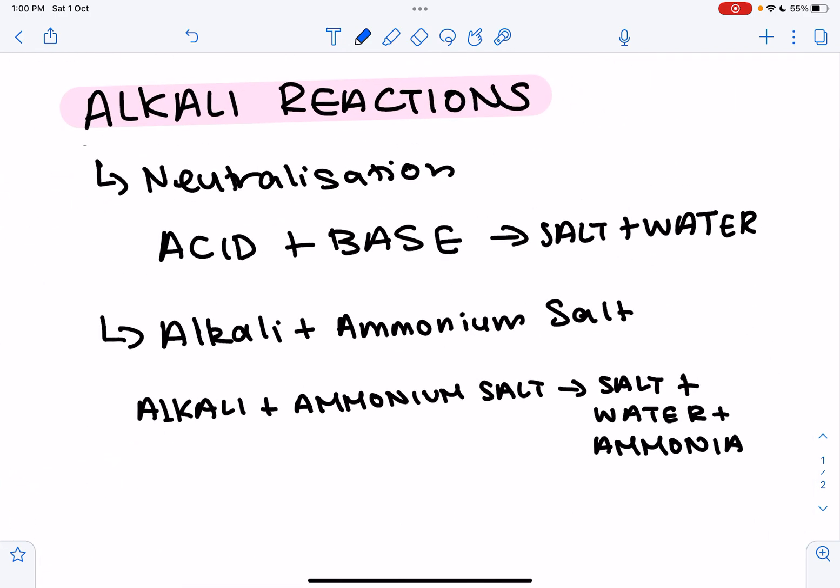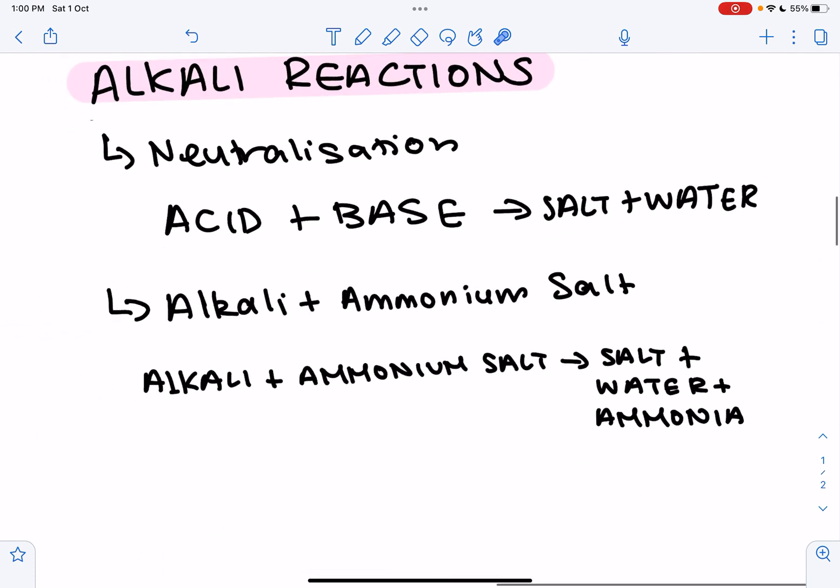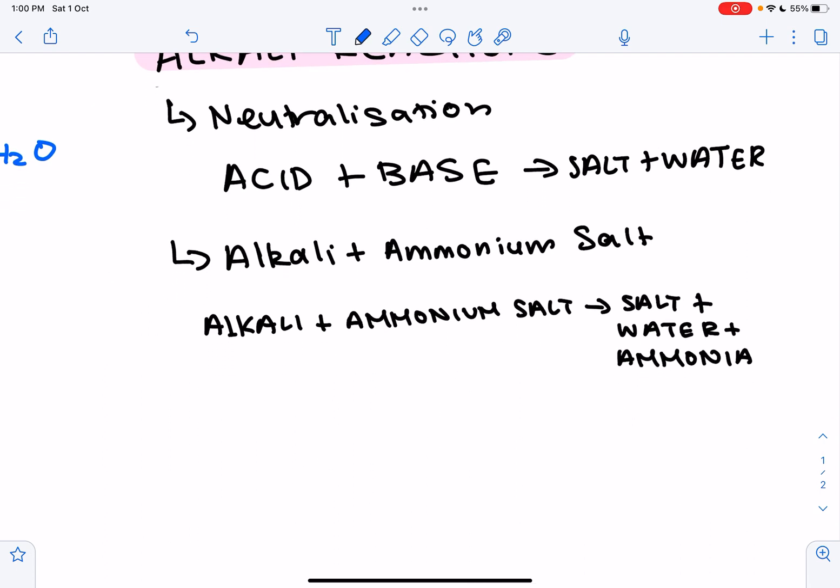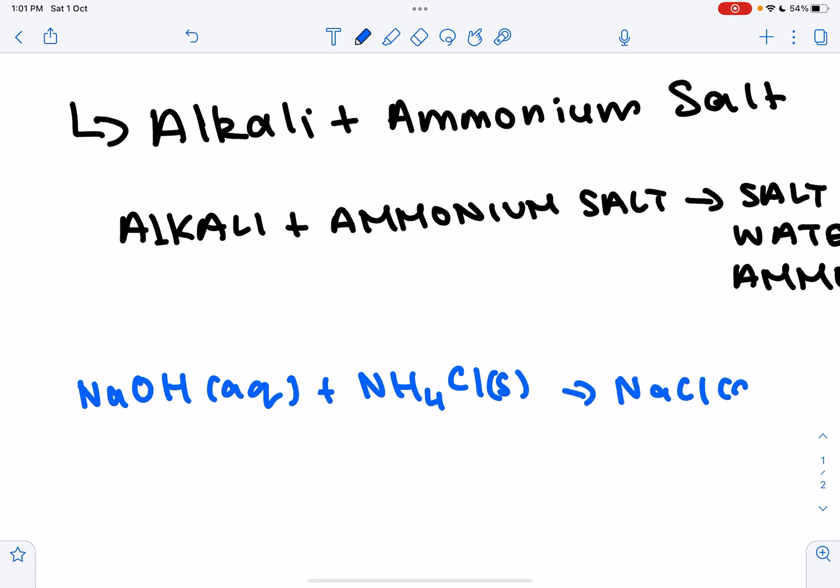Now on to our alkali reactions. So first off, we have the same neutralization reaction, which we saw over here, where an acid plus base gives you a salt and water. And the second one for alkali reactions is going to be an alkali plus ammonium salt. So the observations here would be that the solid dissolves and bubbling. And what are our products? So our products are going to be salt plus water plus ammonia gas. So let's write an equation for this. So we could have sodium hydroxide plus ammonium chloride, which gives us sodium chloride plus water plus ammonia gas.